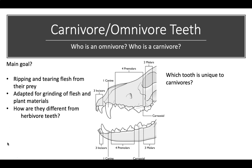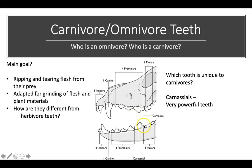The main goal of carnivore and omnivore teeth is ripping and tearing of flesh, adapted for grinding of flesh and plant materials. Herbivores have flat teeth. Some herbivores like sheep don't have upper incisors, and certain herbivores have gaps in their teeth. The tooth unique to carnivores is the carnassial tooth — a very powerful tooth with two cusps on top and three on the bottom, specific to carnivores.